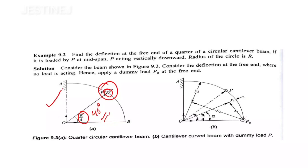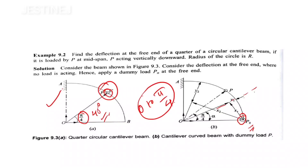To find the deflection at point B, we apply a dummy load P₀ at point B. Now consider a section in the region from 0 to π/4. If you take a section in this region, the bending moment is going to be minus P₀ multiplied by the horizontal distance, which you can calculate from the triangle.